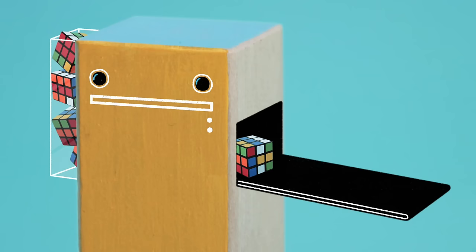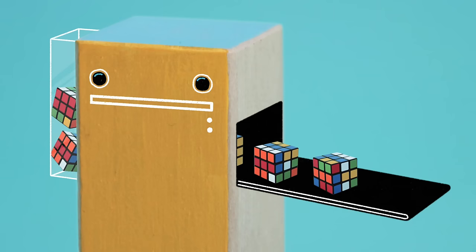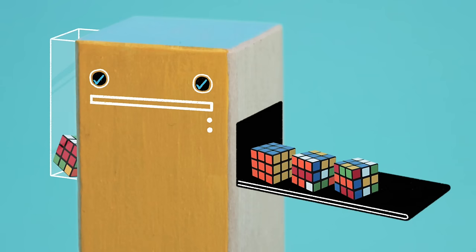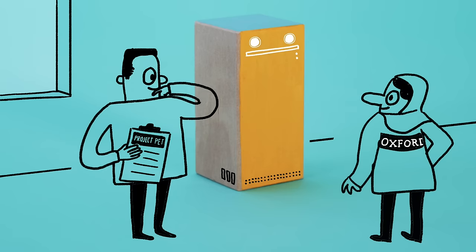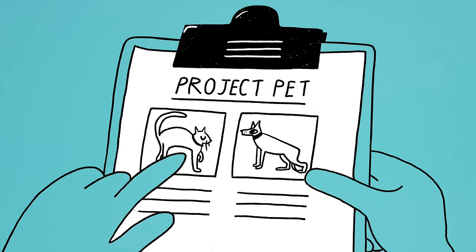Just as your brain uses experience to improve at a task, so can computers. Say you need a computer that can tell the difference between a picture of a dog and a picture of a cat.